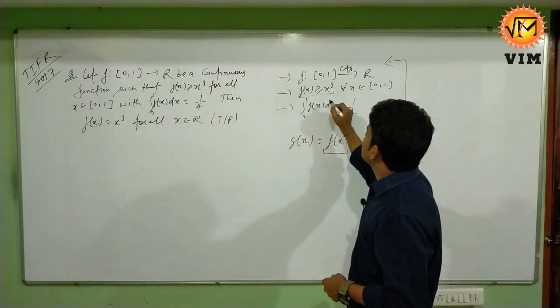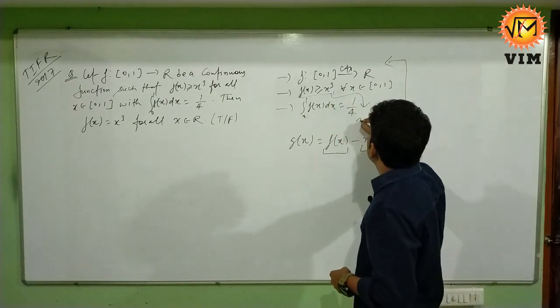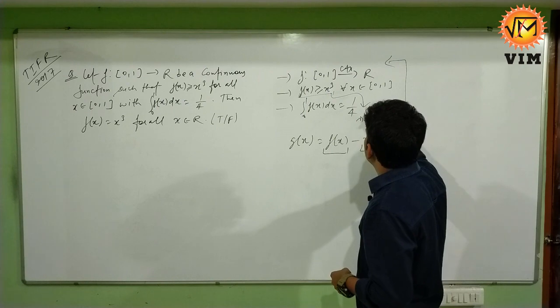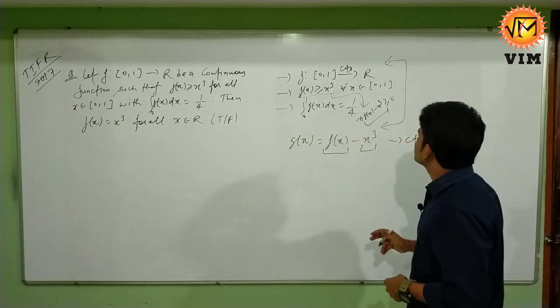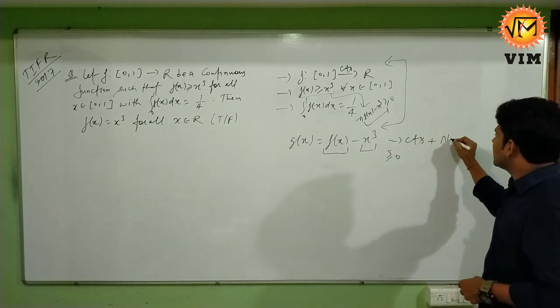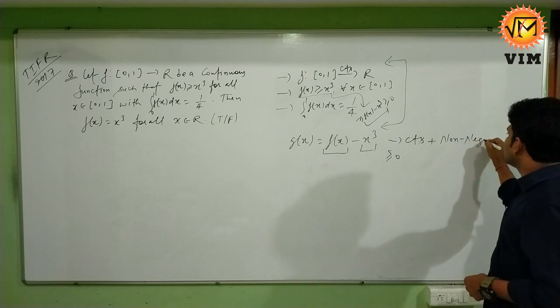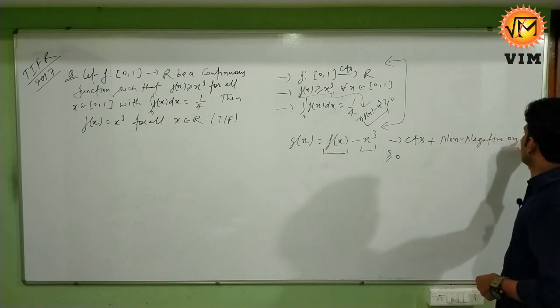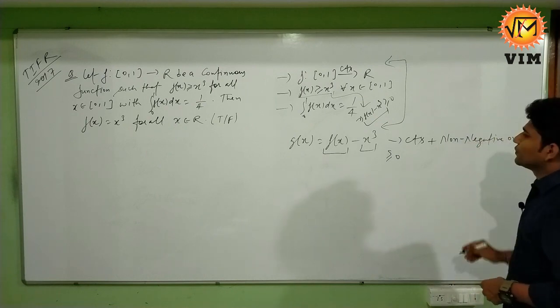Now f(x) ≥ x³, that implies f(x) - x³ ≥ 0. So g(x) is also greater than or equal to 0. That is, g(x) is continuous and non-negative function on closed interval [0,1].